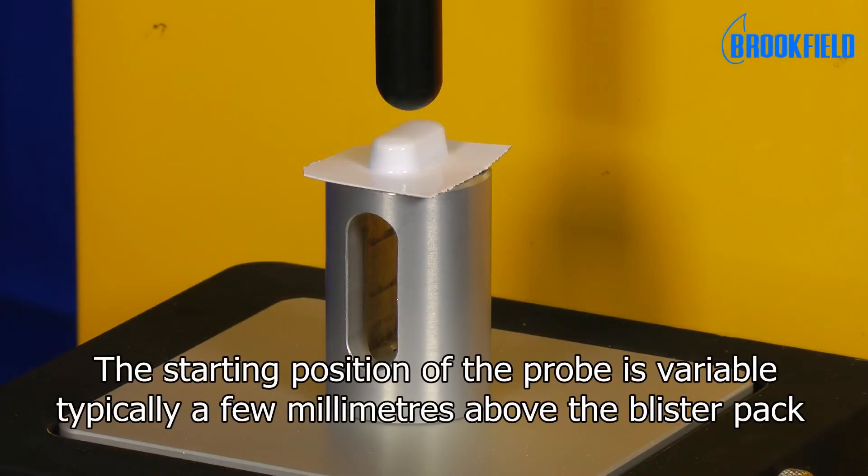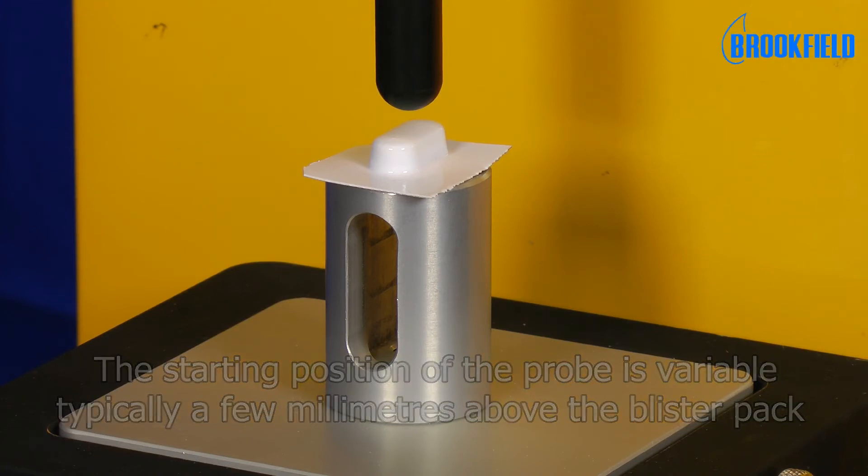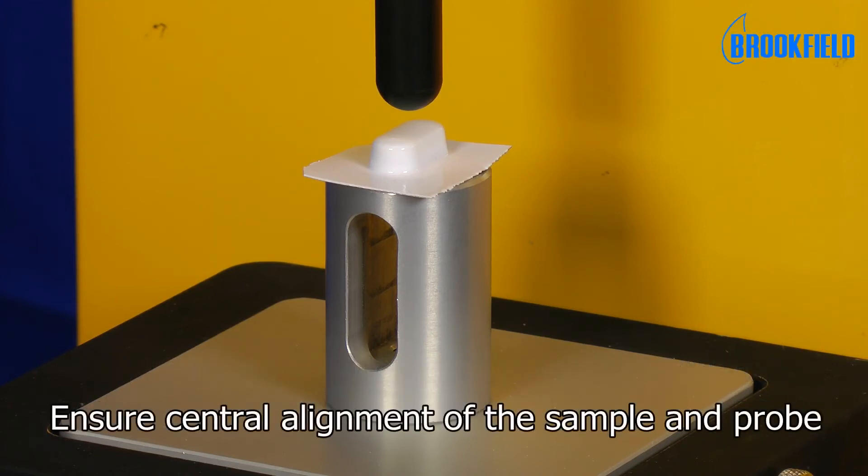The starting position for the probe can vary, typically a few millimeters from the blister pack. Also ensure that the blister pack is centrally under the probe.